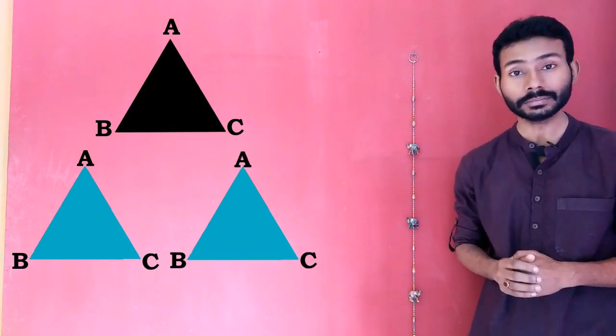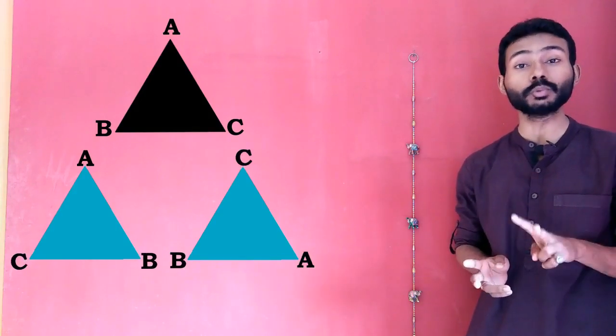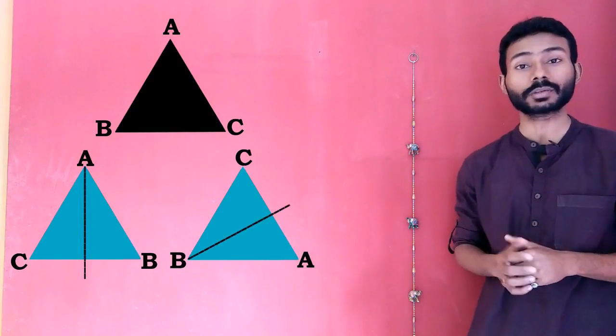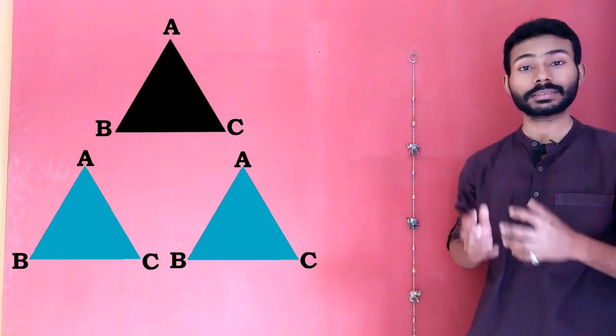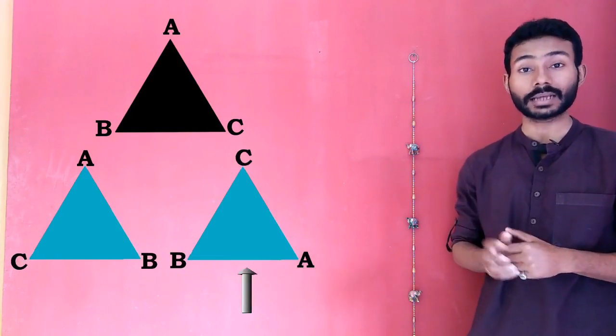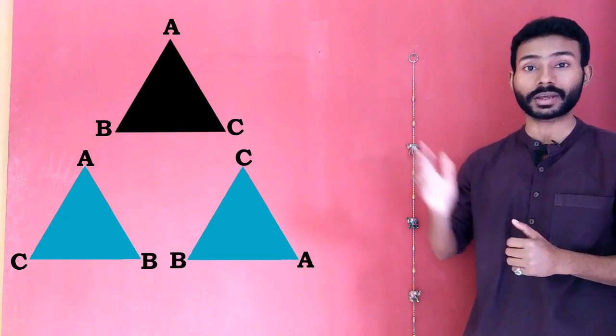And what does that mean? It means both these triangles have order two because if we flip both these triangles twice about the same axis of symmetry, we end up getting the same triangle that we started with. Therefore, both these triangles are Sylow-2 subgroups of the triangle ABC.